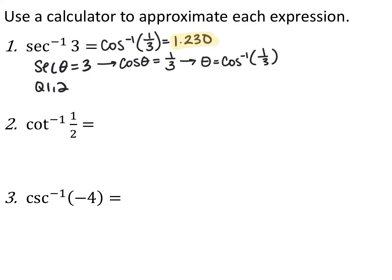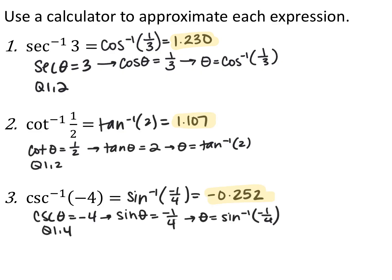For cotangent inverse of one-half: cotangent of some angle theta equals one-half, which means tangent of that angle equals two. So evaluate this as tangent inverse of two, which is approximately 1.107 radians. For cosecant inverse of negative four: cosecant of some angle equals negative four, which means sine of that angle equals negative one-fourth. Evaluate this as sine inverse of negative one-fourth, which is approximately negative 0.252 radians.